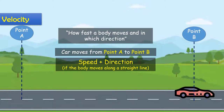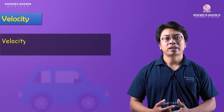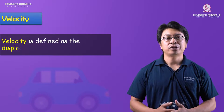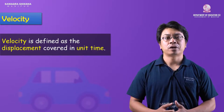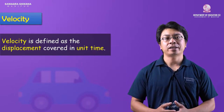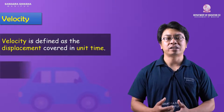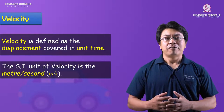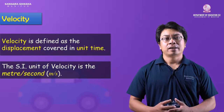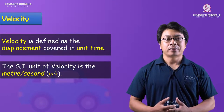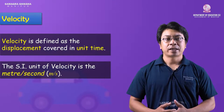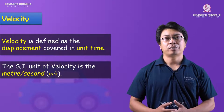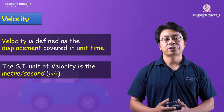If the body changes its velocity, we define velocity as the displacement travelled in unit time. The SI unit of velocity is meter per second, same as speed.